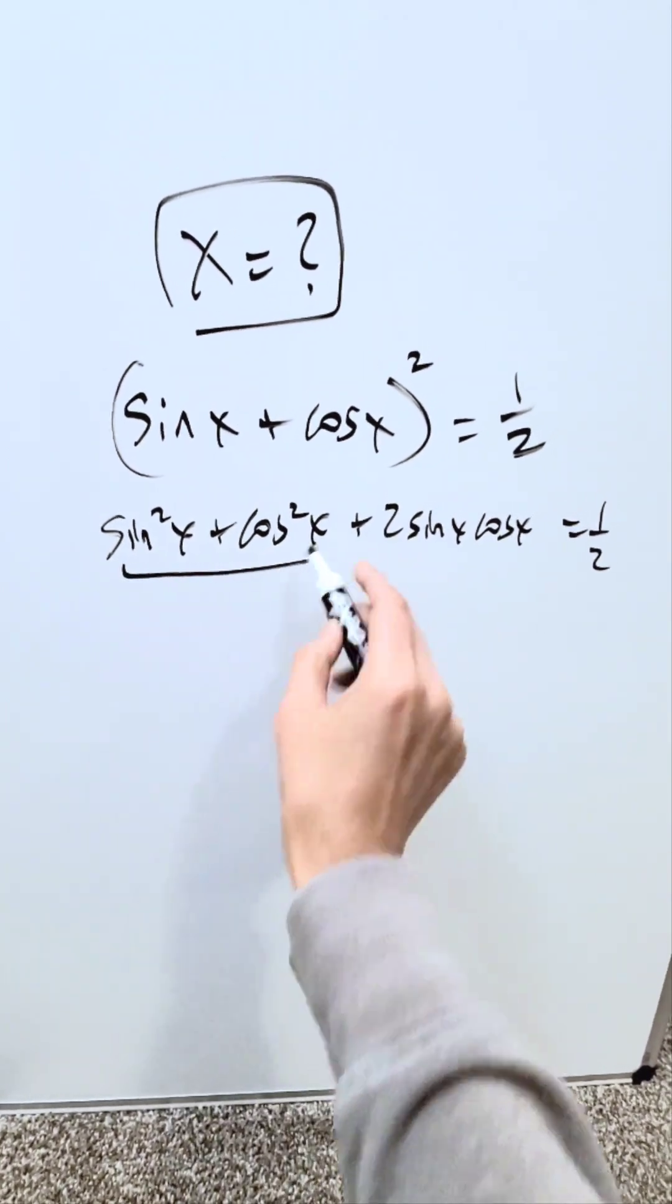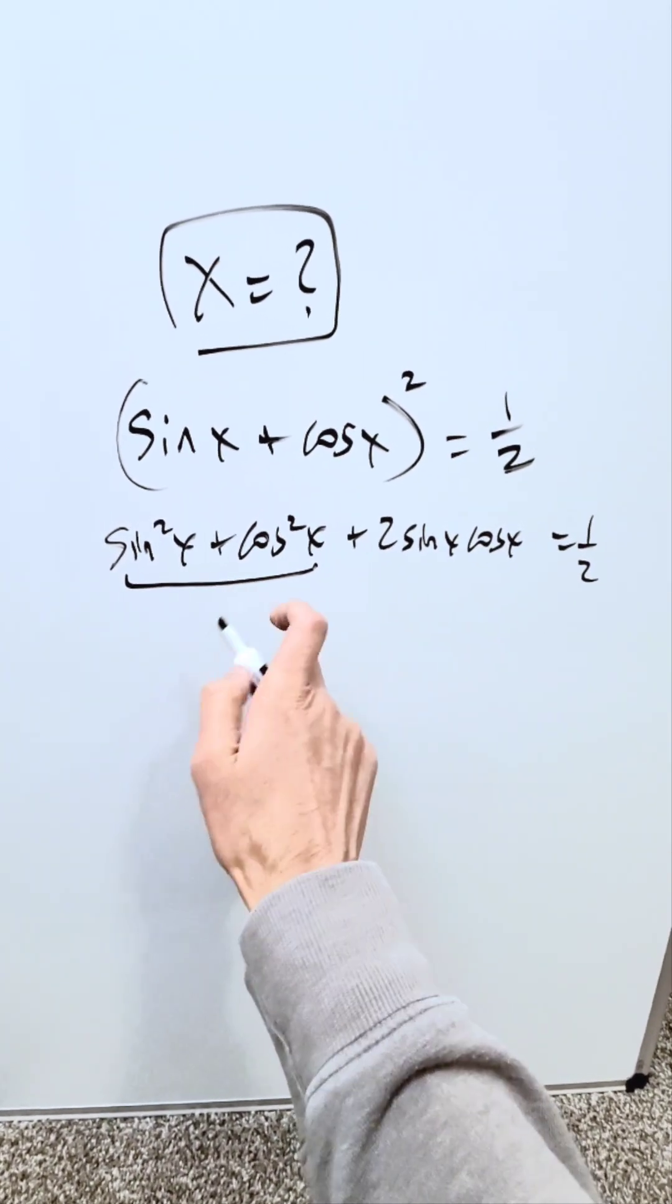There's a trigonometric identity that helps you get rid of this. Sine square x plus cosine square x is equal to 1.